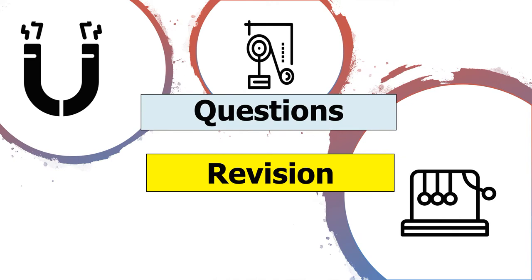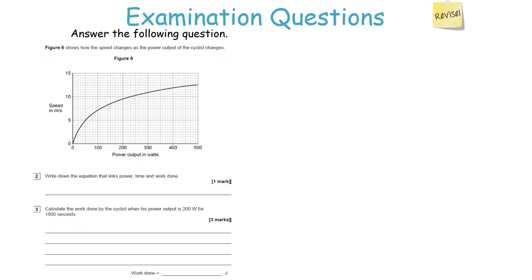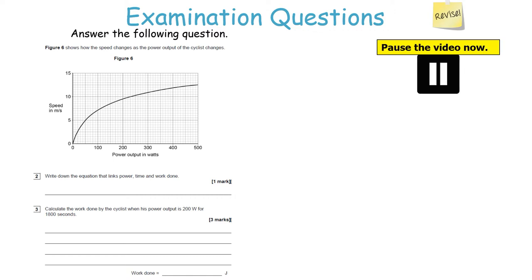Let's have a look at a few questions for GCSE Physics Paper 1. The first topic is energy. Figure 6 shows how the speed changes as the power output of the cyclist changes. Write down the equation that links power, time and work done. Then calculate the work done by the cyclist when his power output is 200 watts for 1,800 seconds. Pause the video now, then unpause when you want to go through the answer.